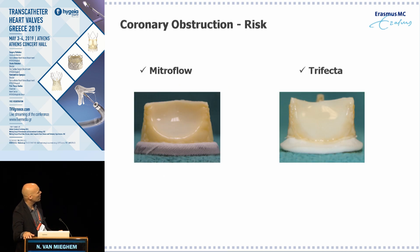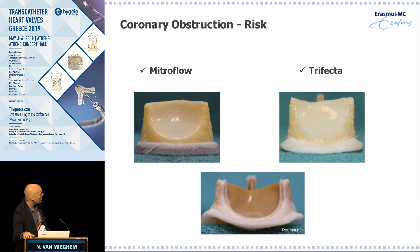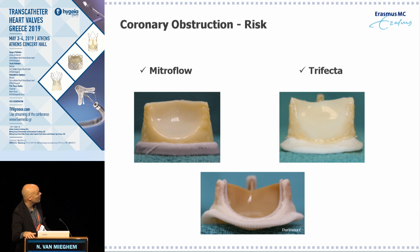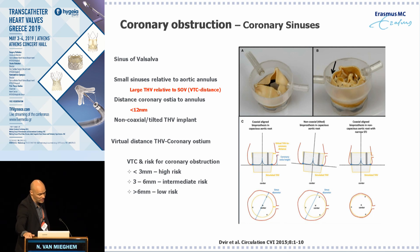We have stented valves, stentless valves, stented valves with internally mounted leaflets, and especially stented valves with externally mounted leaflets like the Mitra Flow, which are notorious for being associated with coronary obstruction. The Mitra Flow and the Trifecta have leaflets sutured on the outside of the posts, compared to for instance a Paramount where the leaflets are within the posts.